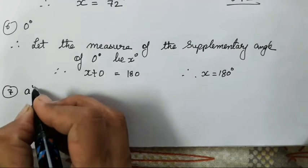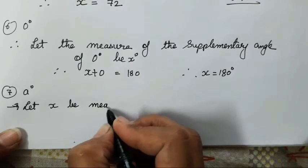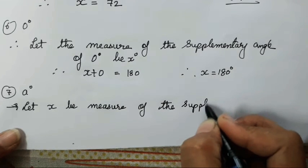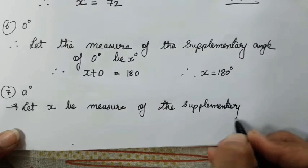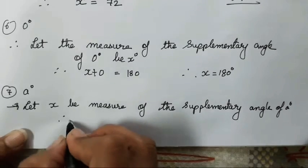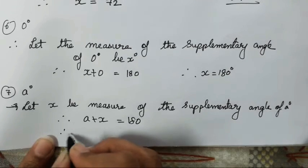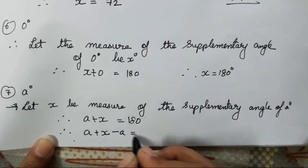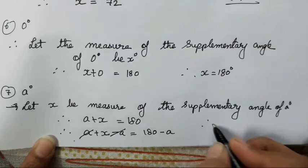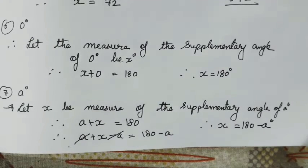The seventh sum is a degrees. Let x be the measure of the supplementary angle of a degrees. Therefore a plus x equals 180. Subtracting a from both sides, a gets cancelled. Therefore x equals 180 minus a degrees, and that is your answer.